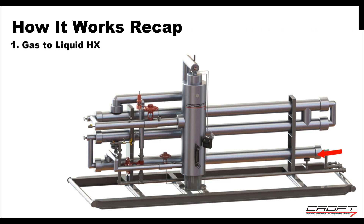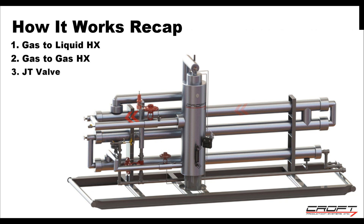Rich, hot gas enters the liquid-to-gas heat exchanger where it is cooled by cold NGLs coming from the cold separator. The rich gas will then continue to the gas-to-gas heat exchanger where it is cooled by lean cold gas coming from the cold separator. The gas will then go through a JT valve where it takes a pressure drop. We will use the chilling effect of that pressure drop to chill down the gas and ultimately reach our cold separation temperature. The cold gas will then go into the separator where the liquids are separated out of the gas. The liquids will fall to the bottom of the separator and be dumped down into the liquid-to-gas heat exchanger where the cold fluids are used to cool the incoming hot gas.